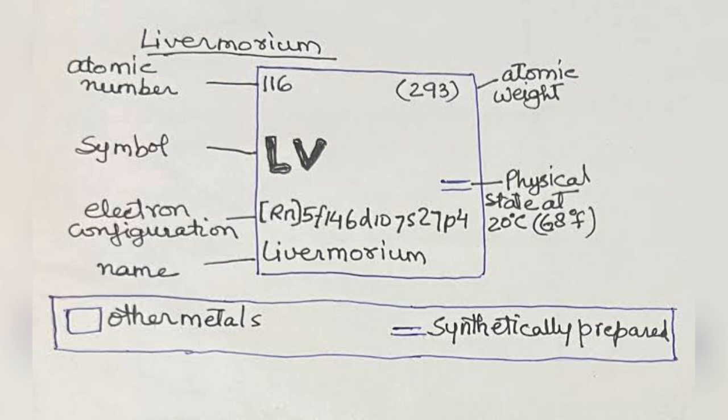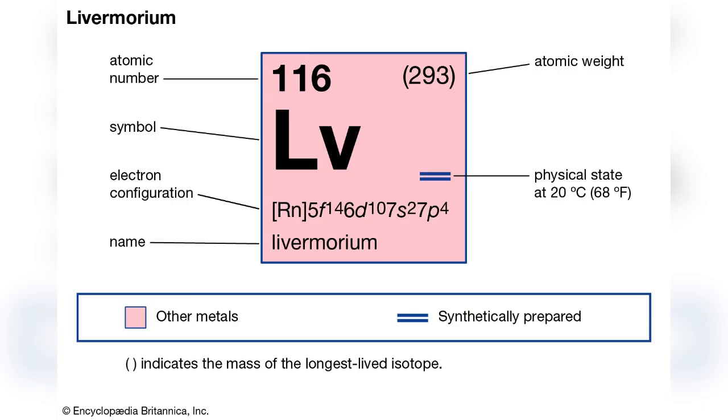How was this created? Researchers used a powerful particle accelerator to smash together Titanium-50 atoms. They needed to produce a highly intense beam of Titanium-50 and target it at a thin layer of plutonium to produce Livermorium.